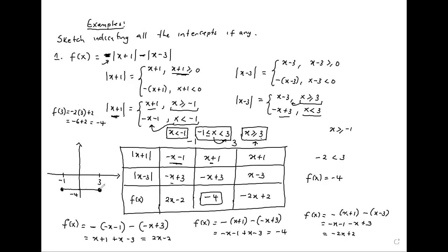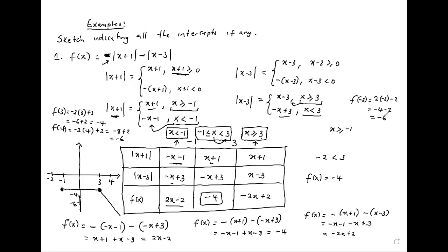Taking x equals 4: f(4) equals negative 8 plus 2, which is negative 6. Since negative 6 is lower than negative 4, the function is coming down on that side. On the other side, taking x equals negative 2 and substituting into 2x minus 2: f(negative 2) equals negative 4 minus 2, which is negative 6 — also lower than negative 4, so the function is coming down on that side too.